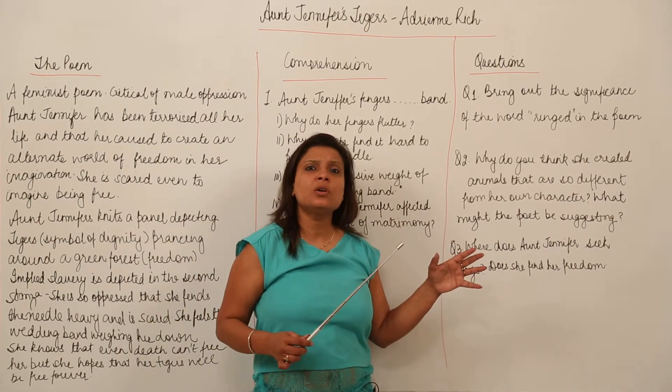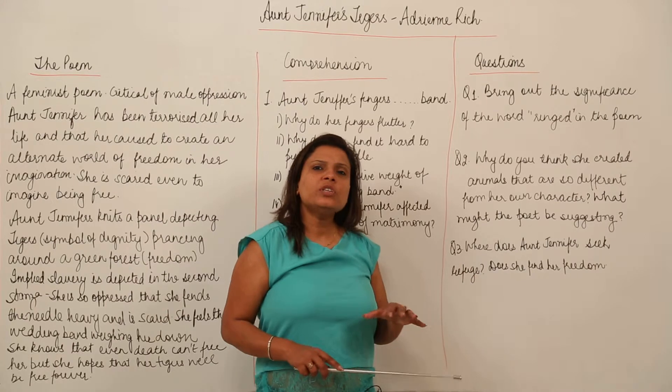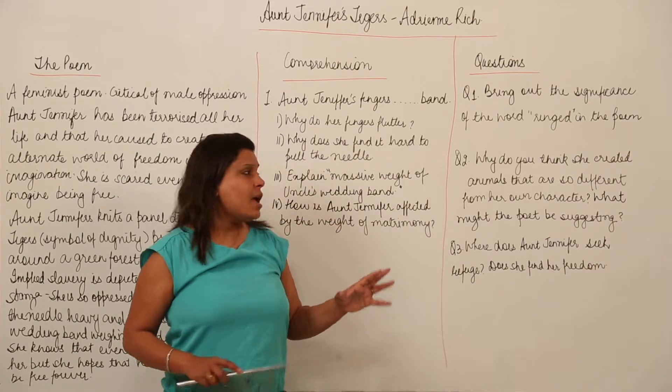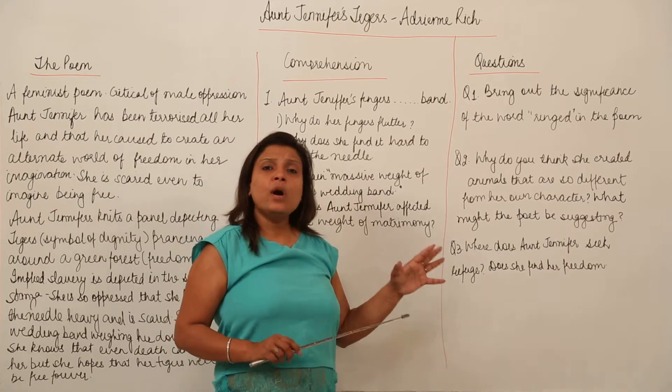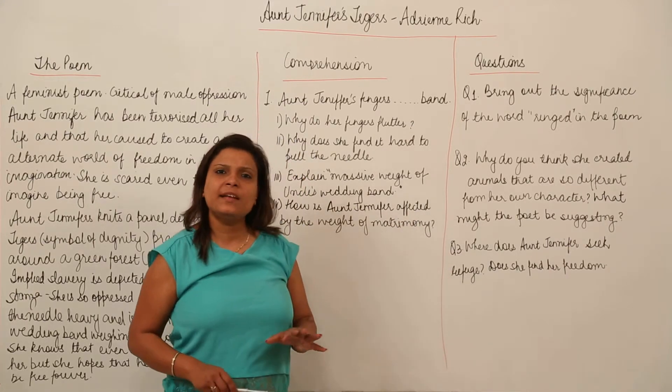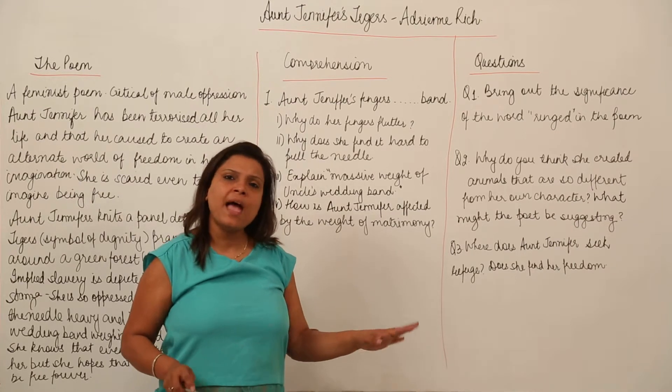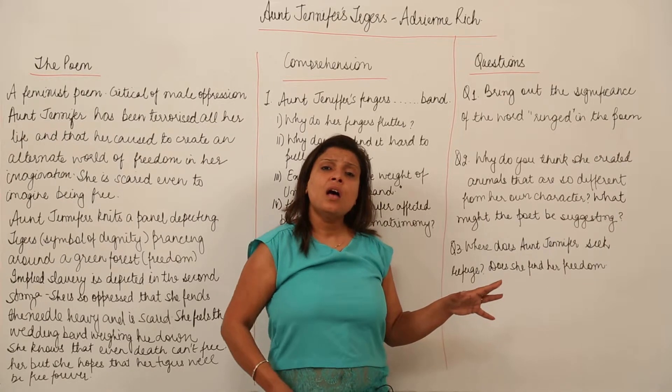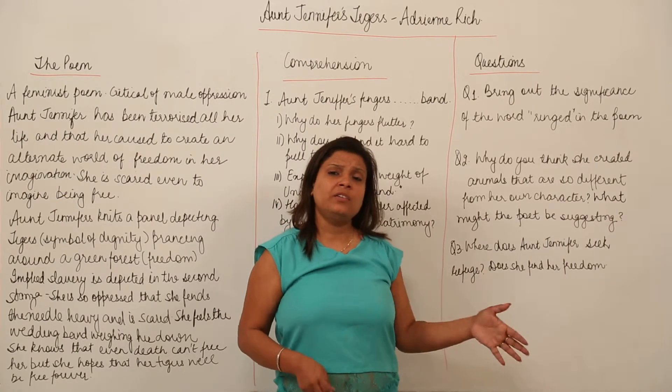And that is why she builds, she embroiders or she knits these characters which are totally tigers, which are totally free, regal, majestic and who are enjoying the freedom in the forest and are not affected by the presence of any man. So she is actually rebelling in her imagination against the patriarchal society.